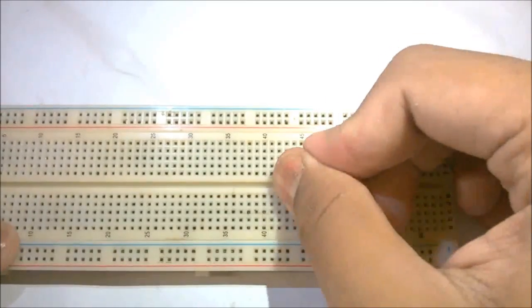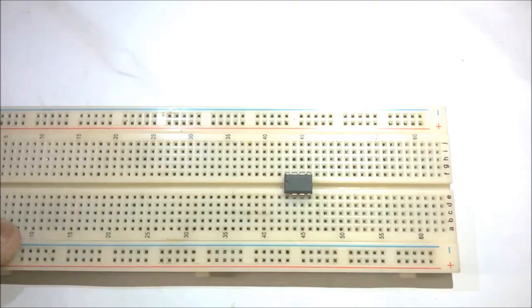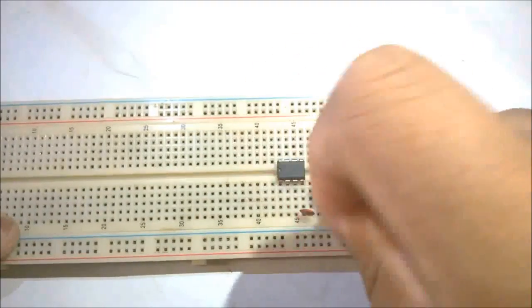Now we are going to build this on breadboard. Start with mounting the LM306 op amp IC. Try to keep all the connections as close as possible.